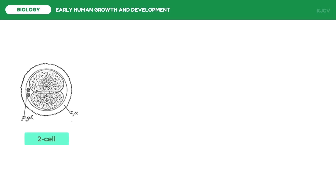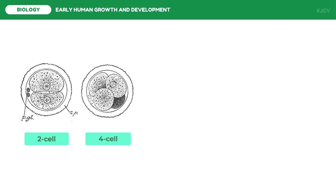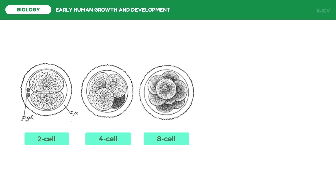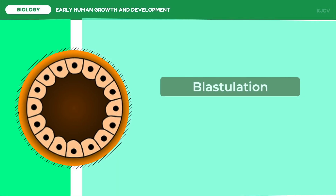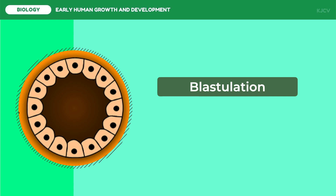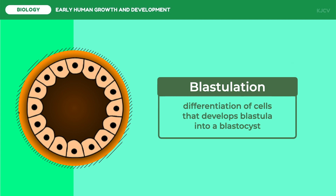After one mitotic division the zygote is in a two-cell stage, followed by a four-cell stage, then an eight-cell stage, then a sixteen-cell stage. A sixteen-cell stage is called a morula. After seven cleavages have produced 128 cells, the morula becomes a blastula — a spherical layer of cells called the blastoderm surrounding a fluid-filled cavity called the blastocoele. Once this stage is reached, a structure called the blastocyst will be formed.